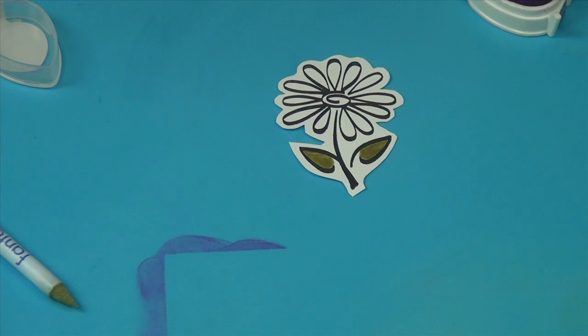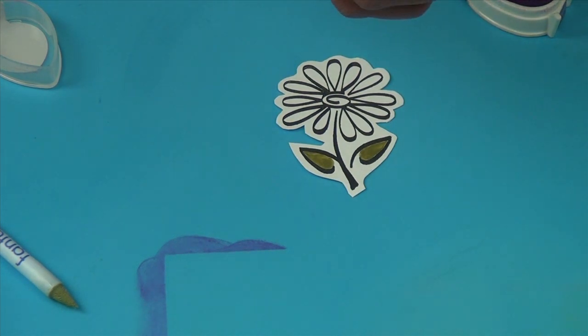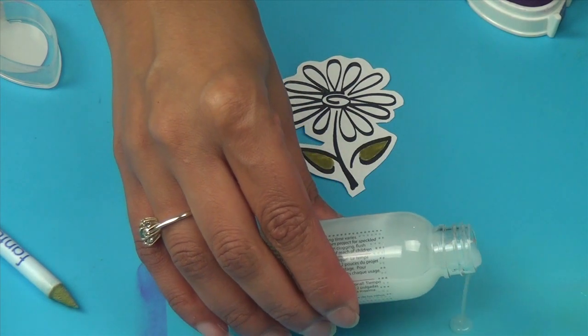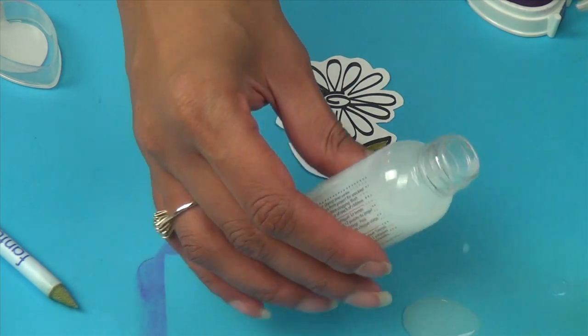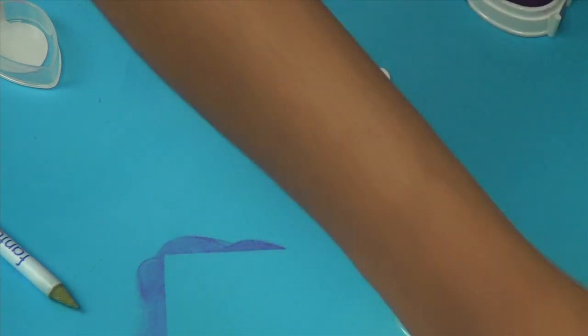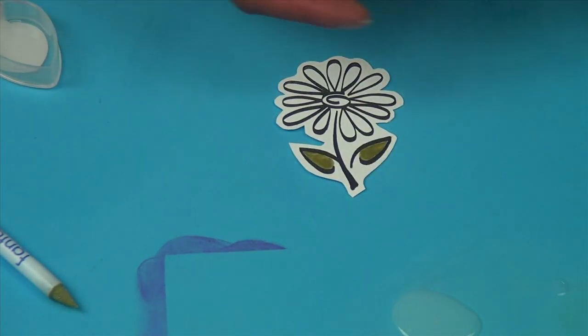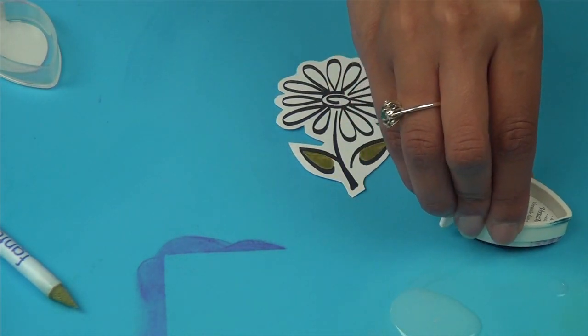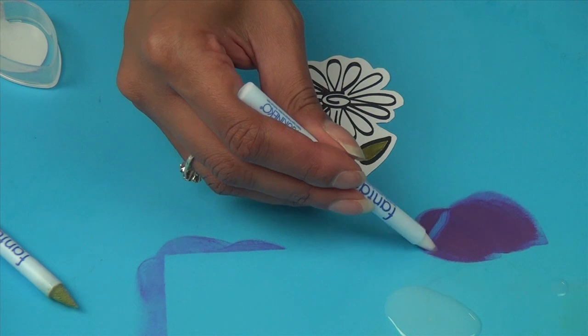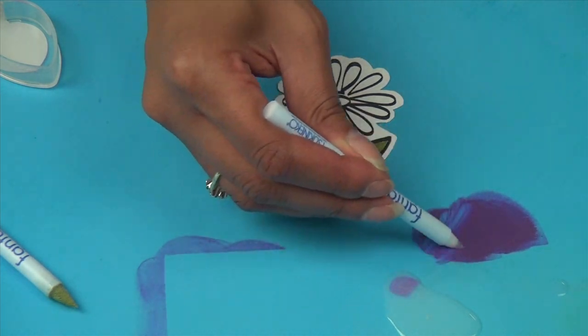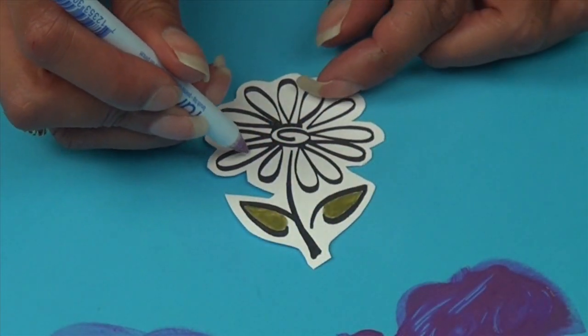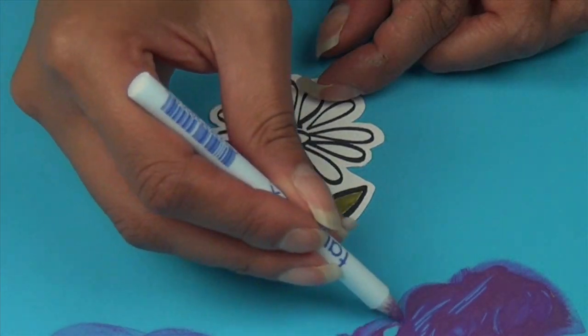Once you're done with the leaves, use the same technique for the flower petals. Pour a little bit of Goosebumps onto your mat. And we're going to use Versamagic in purple hydrangea. Just blend your Goosebumps with your ink and paint right on your petals.